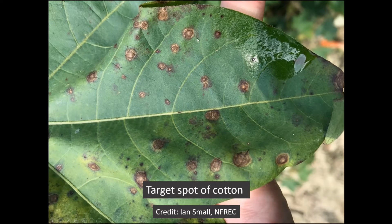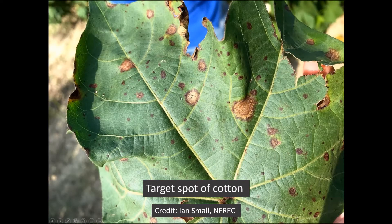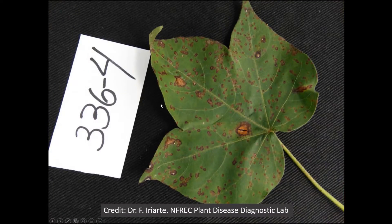Depending on cultivar, target spot can have slight differences in appearance, but the concentric rings later on are a good characteristic to look for. On some cultivars you can see a purple halo around the lesion under some circumstances. Be careful making assumptions about what small lesions might be — a sample may have cercospora leaf spot alongside small target spot lesions, so be careful of making assumptions about what the small lesions might be in your fields.